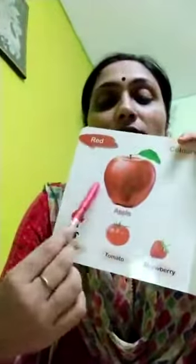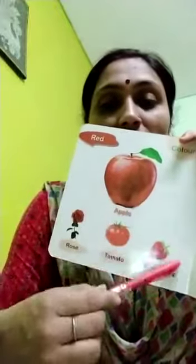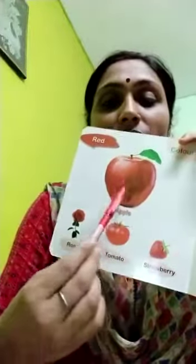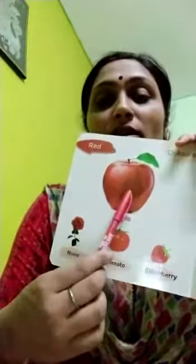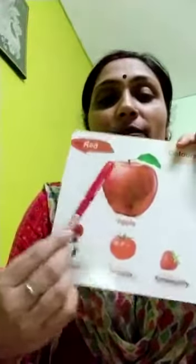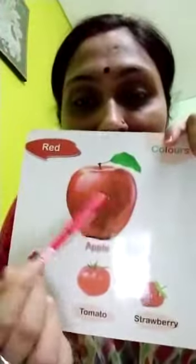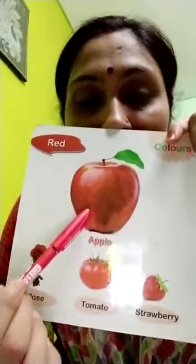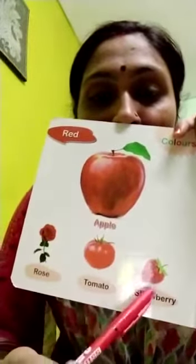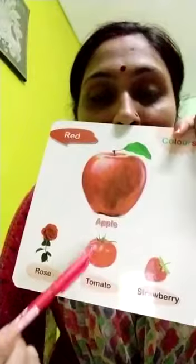You know, we see many things of red and green color around us in our day-to-day life. So many things you see around of red color. Look at this color — red. Red apple is red, strawberry is also red, tomato is red.